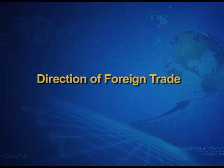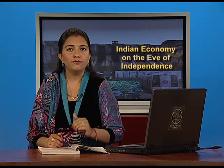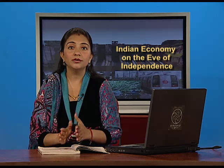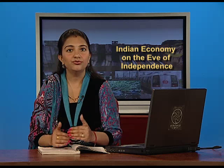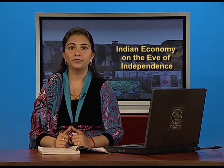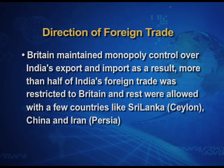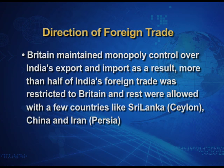Direction of foreign trade means which countries India was trading with at that point of time. Britain maintained monopoly control over India's export and import. As a result, more than half of India's foreign trade was restricted to Britain, and the rest was allowed only with a few countries like Sri Lanka, which was then called Ceylon, China, and Iran, which was then called Persia.